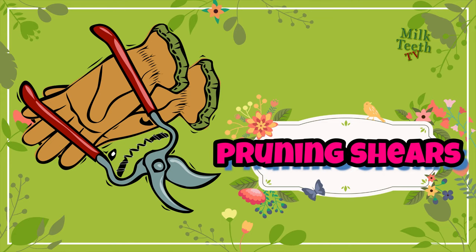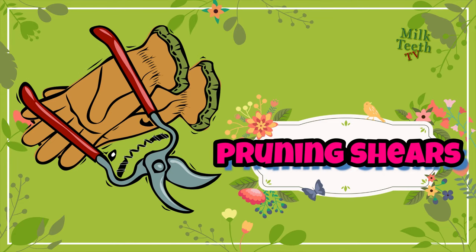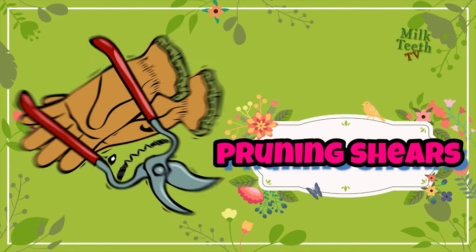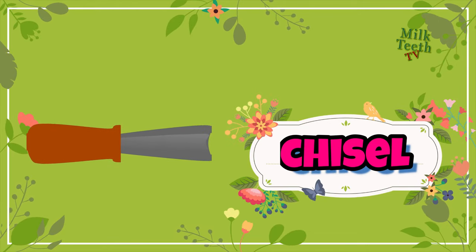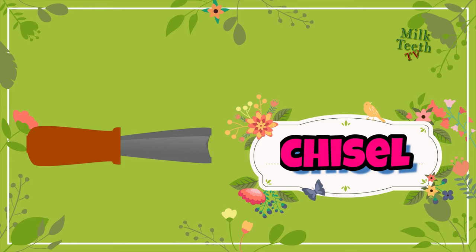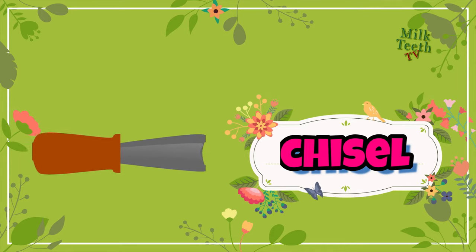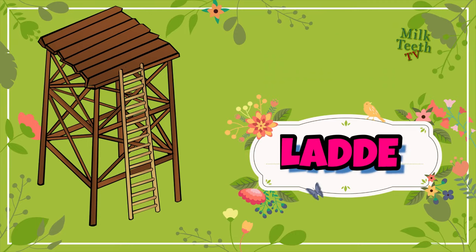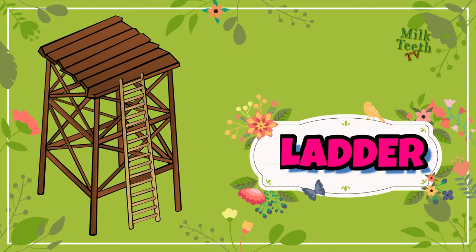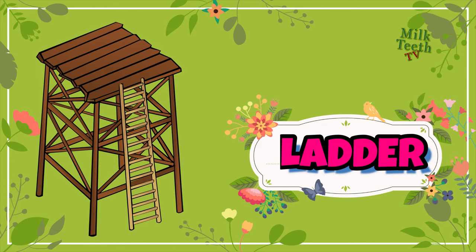Pruning shears, also known as pruners — a kind of scissors with a small handle used for cutting off branches of shrubs and even trees. This is a chisel — an object used for shaping and sharpening of objects such as tools, wood, and stones. Ladder — an equipment used for climbing up and reaching high objects, used to reach the top of high plants and trees in a garden.